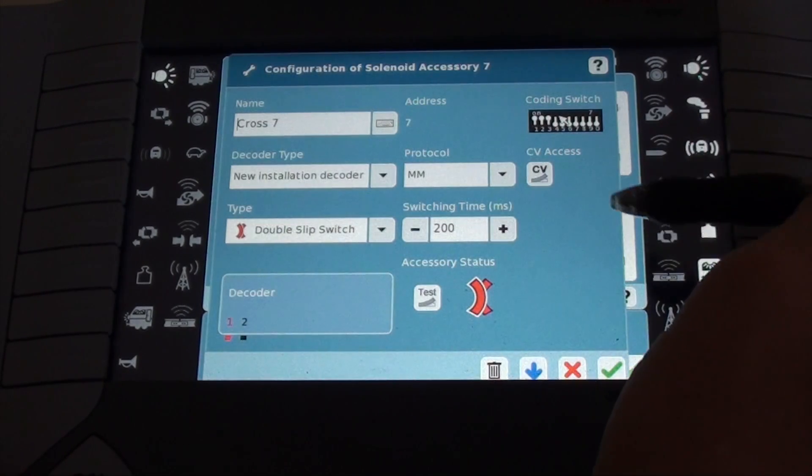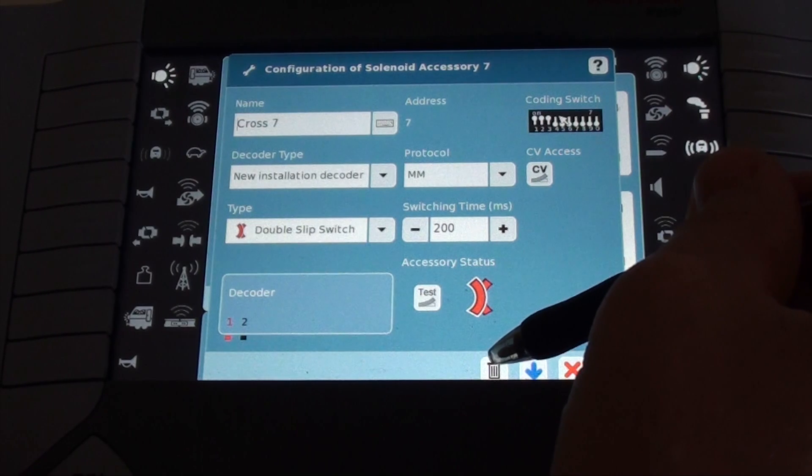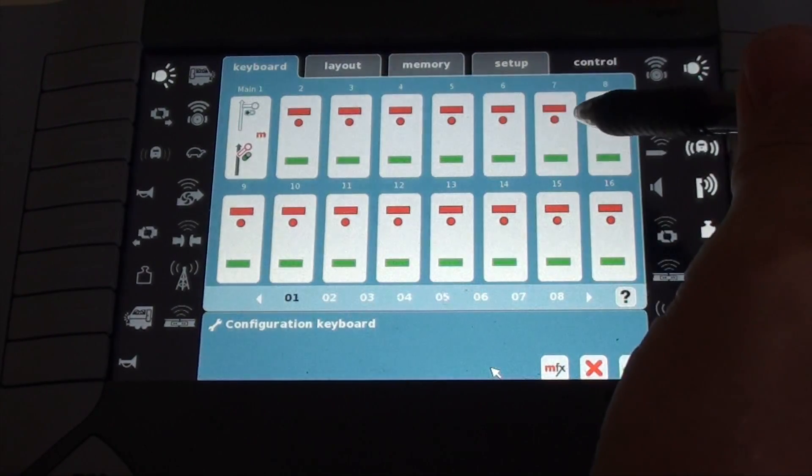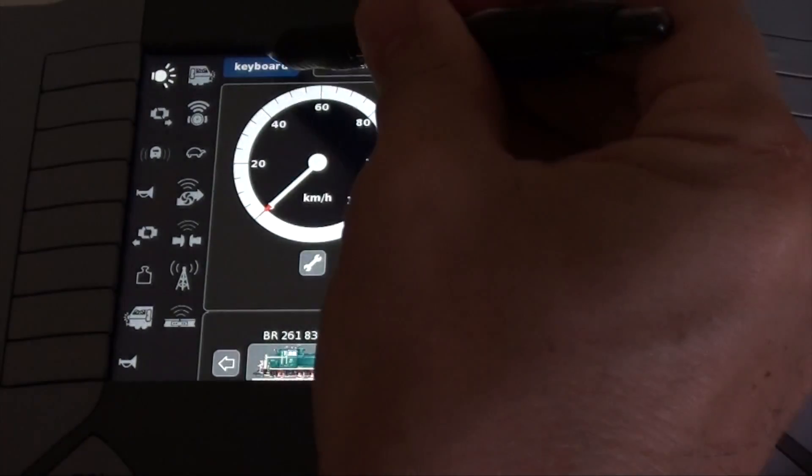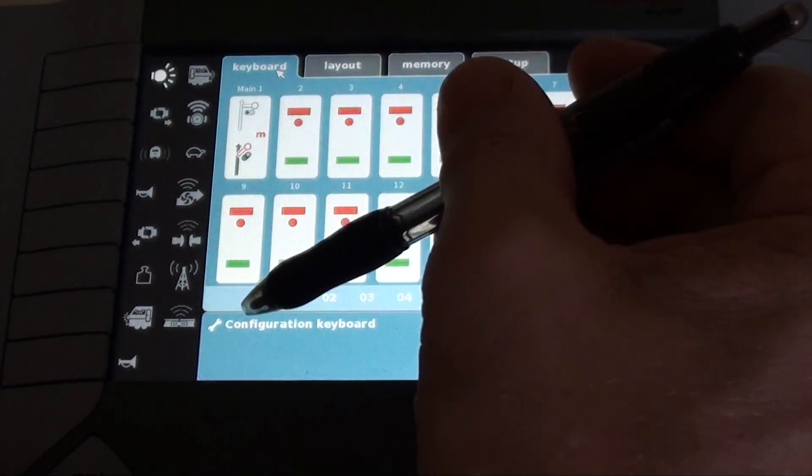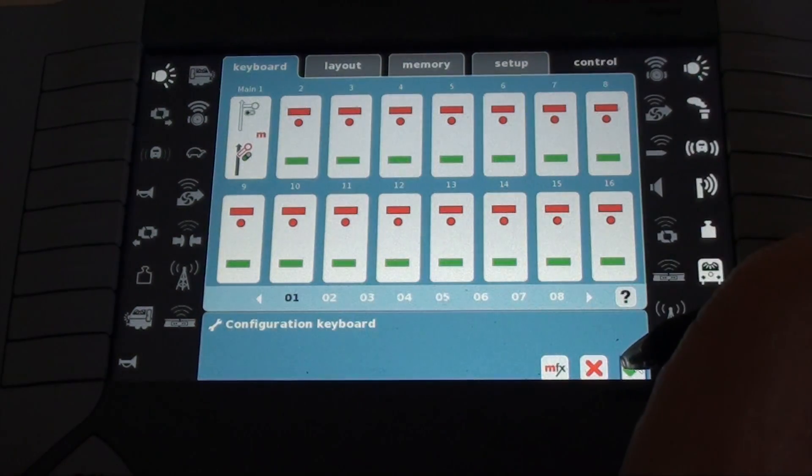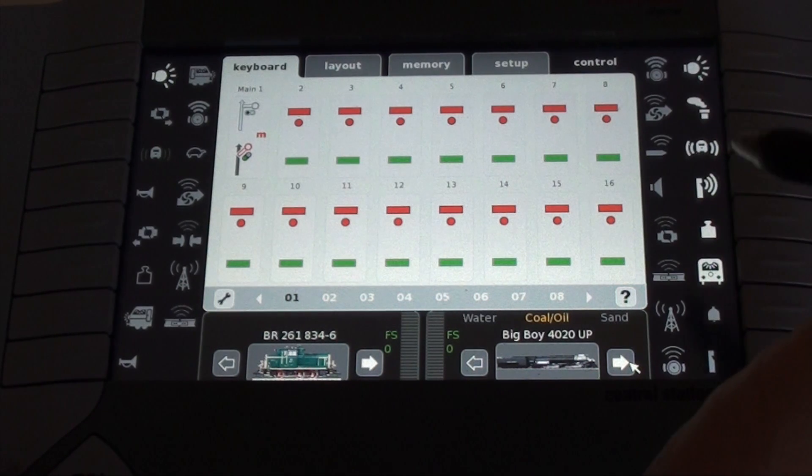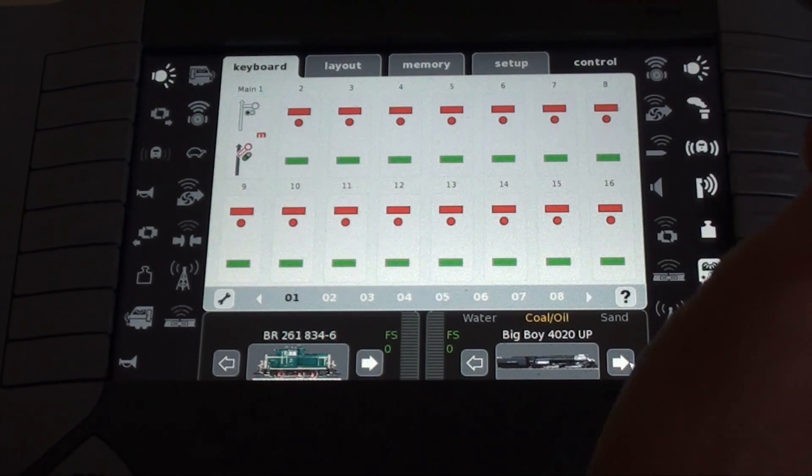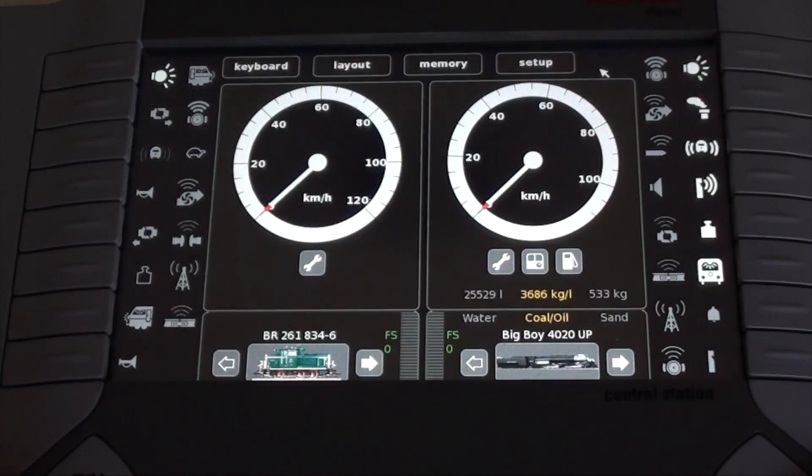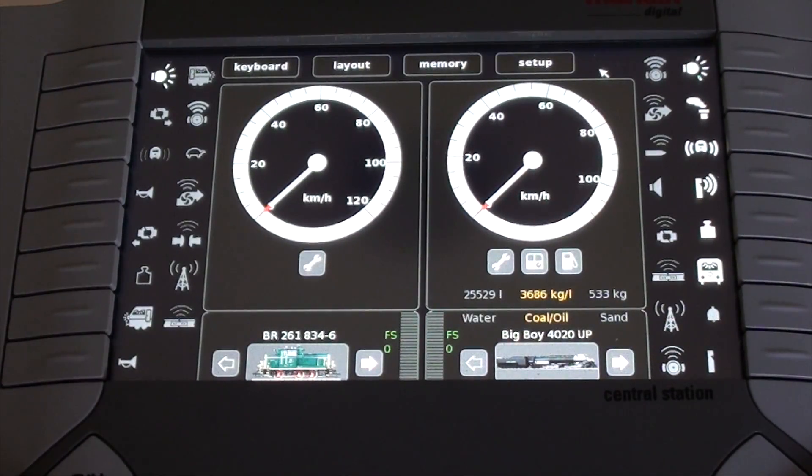If I want to delete it, I hit it again and I hit the trash can. And as you see, it disappears from our keyboard. Back to control. Keyboard tab is still blue because I'm in the configuration keyboard. So I hit the check mark. That gets me back to our normal keyboard. Number seven is gone. Hit control and we're back to the beginning.